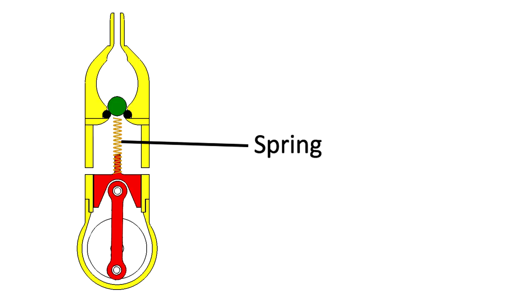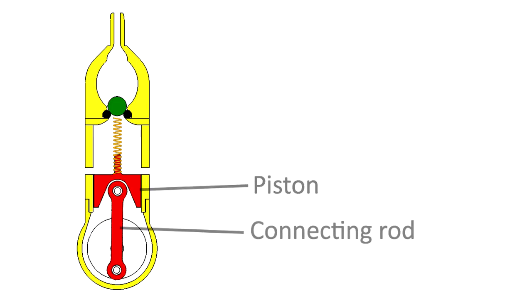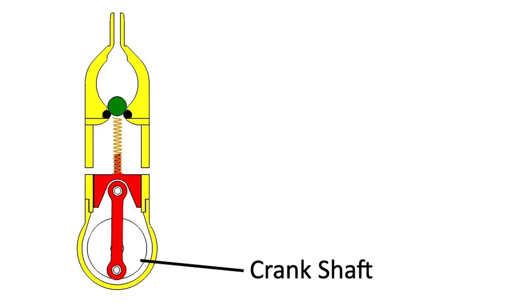Below the ball bearing is a spring which is actually fixed to the piston, which is shown in red. The piston is connected to a connecting rod, which is then connected to the crankshaft at the bottom. As with any other combustion engine in a car, the crankshaft translates the up and down oscillating movement of the piston into a rotational movement for the main drive shaft.